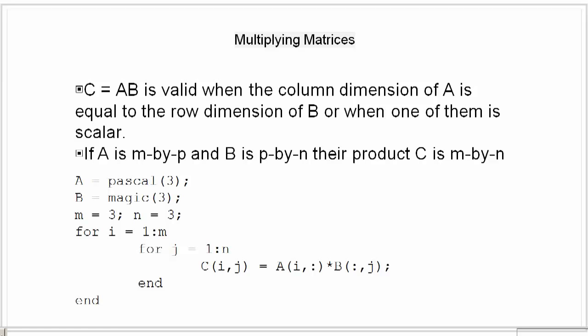The code snippet shows how the product can actually be defined using MATLAB, for loops, colon notation and vector dot products. So, as you can see, I defined matrix A as Pascal of 3, B as magic 3 and then I did a for loop multiplying A into B and storing them in C. This is a very well known formula.